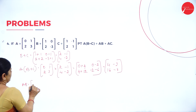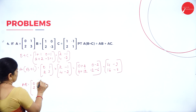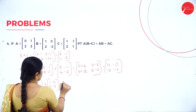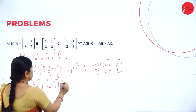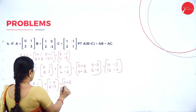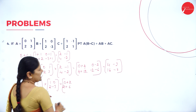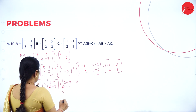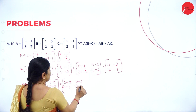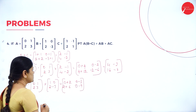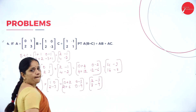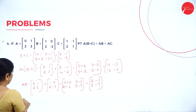Now we have to find AB. AB equals [0, 1; 2, 3] multiplied by [1, 0; 2, -3]. This gives: 0×1 plus 1×2 equals 2; 2×1 plus 3×2 equals 8; 0×0 plus 1×(-3) equals -3; 2×0 plus 3×(-3) equals -9. So AB equals [2, -3; 8, -9].